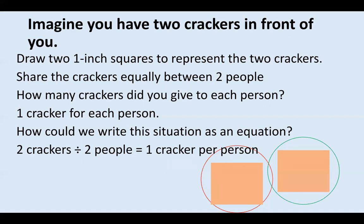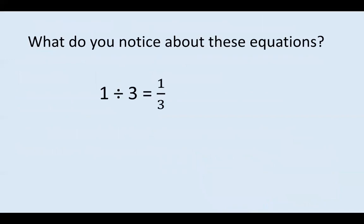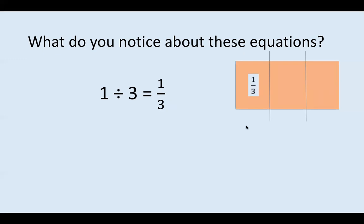Does that look like a fraction to you? Probably not yet. But what do you notice about this equation? One divided by three equals one third. Does that make sense? Let's take a look at a picture. We have a rectangle — one whole rectangle — and we need to divide that rectangle into three equal groups. I'm going to take some lines and split this rectangle into three equal groups or three equal parts. So now I have three parts to one whole rectangle, which means I have one third, one third, and one third in each section. So when I split one whole rectangle into three equal groups, each group is going to be one third of that original rectangle size. Make sense so far?